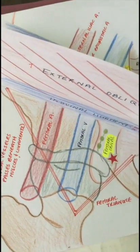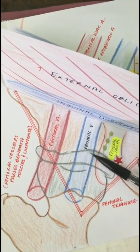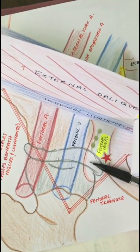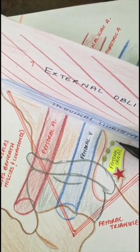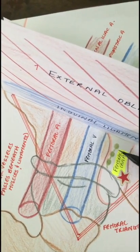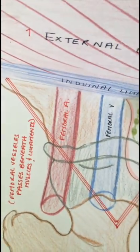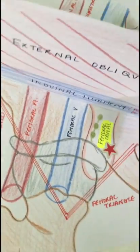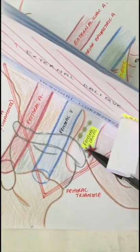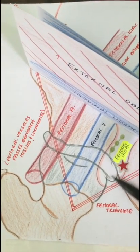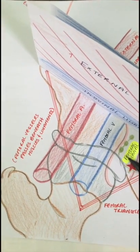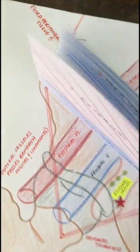Within the femoral sheath we have the femoral artery, femoral vein, and lymph nodes. The most medial portion of the femoral sheath is the femoral canal, which is an outpouching of the parietal peritoneum — that's where lymph nodes are found. The external iliac artery and vein pass beneath the inguinal ligament to become the femoral artery and femoral vein.